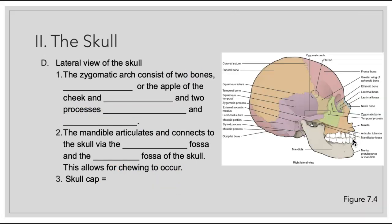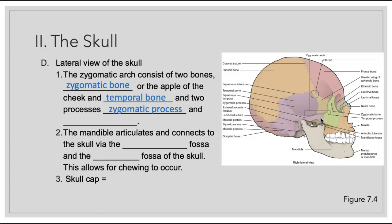In a lateral view of the skull, we are going to see the zygomatic arch, which is a combination of two bones: the zygomatic bone making up the apple of our cheek, and the temporal bone. These two processes extending from one another create the zygomatic process and the temporal process, coming together to form that zygomatic arch. Below here, we have our mandible articulating and connecting to the skull through the infratemporal fossa and the temporal fossa, allowing the chewing motion to take place.